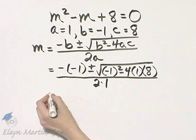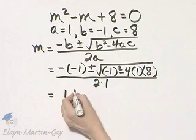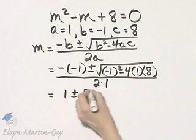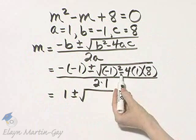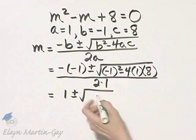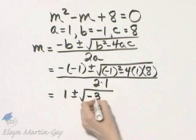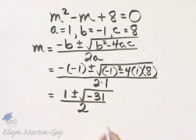Let's simplify then. The opposite of negative 1 is 1, and then this is plus or minus the square root of, this is 1 minus 32. Negative 1 quantity squared is 1. 1 minus 32, that's negative 31, all over 2 times 1, which is 2.